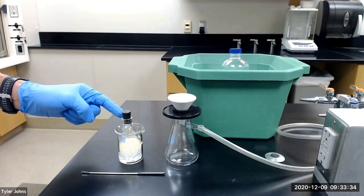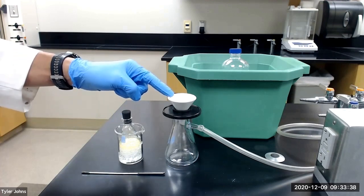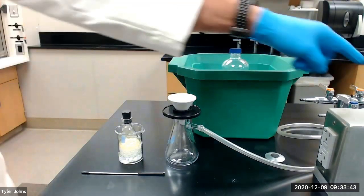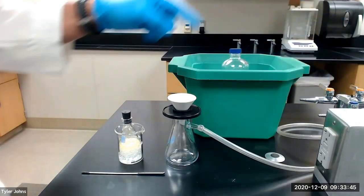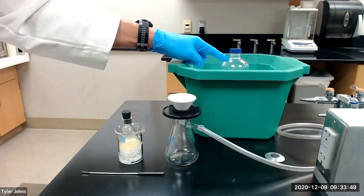We will next collect the crude benzoin crystals by vacuum filtration using a Hirsch funnel. We will begin by placing a piece of filter paper inside the Hirsch funnel and turning on the vacuum. We will then moisten the filter paper with several drops of ice cold deionized water.